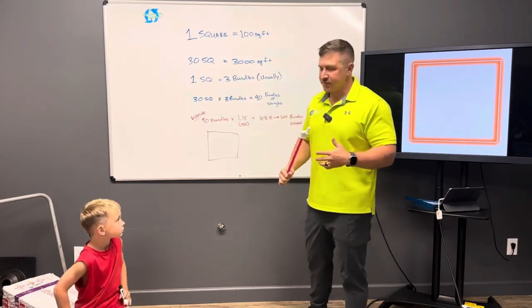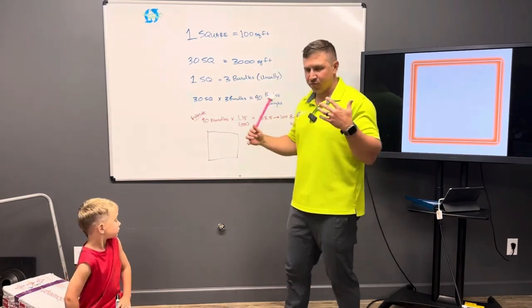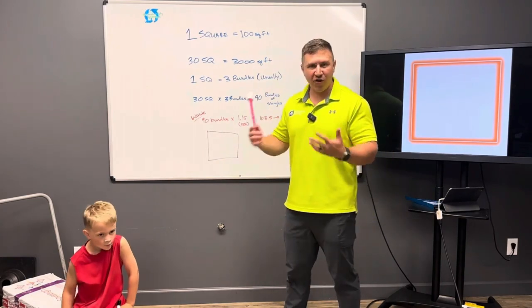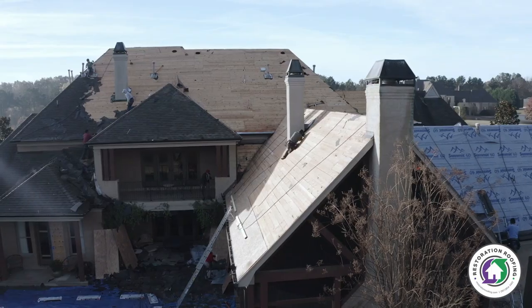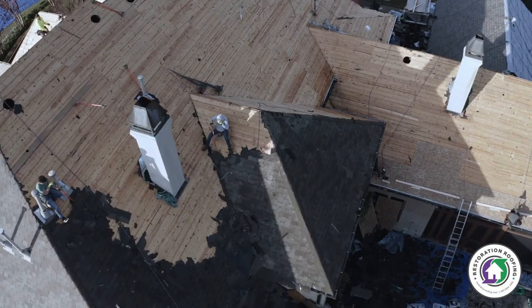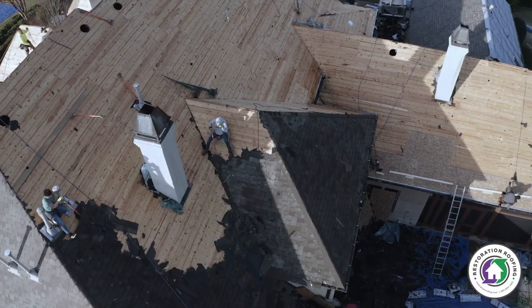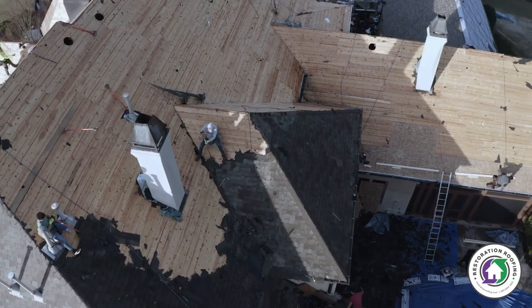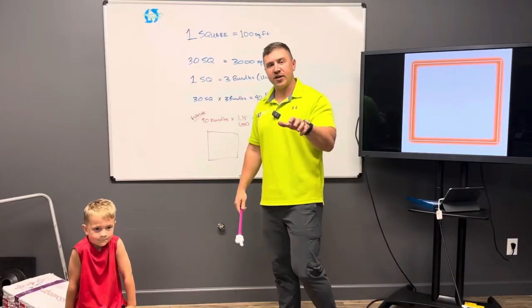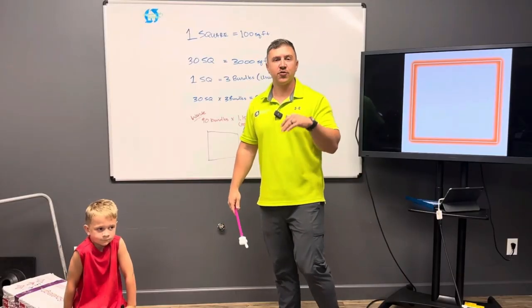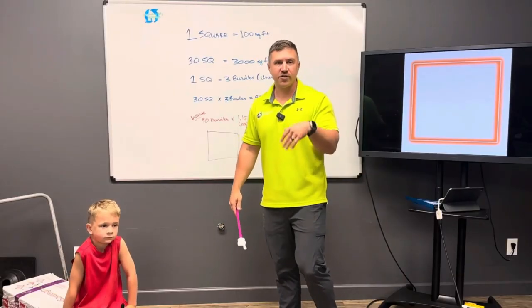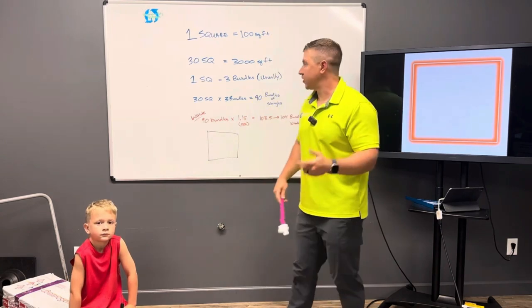One square is actually 100 square feet. Since roofs are very large — 3,000, 4,000 square feet — it just helps us to shorten it to 30 squares, 40 squares, and so on and so forth.